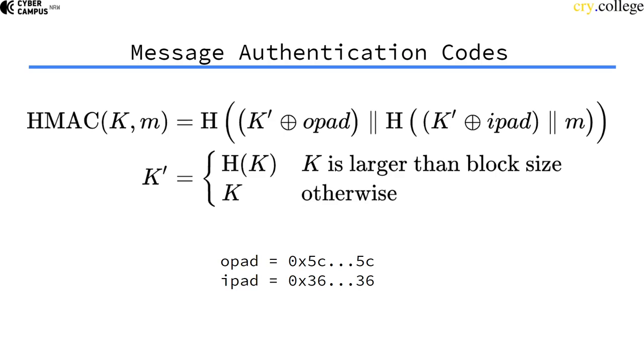HMAC takes a key as input and a message that we want to authenticate or compute a MAC for. Then it XORs the key with an inner pad, which is just a constant that is the same length as the key, and then appends the message to it and hashes this construct.